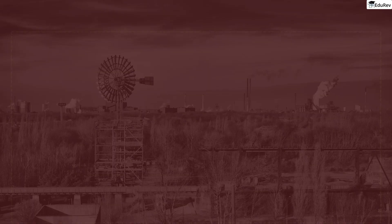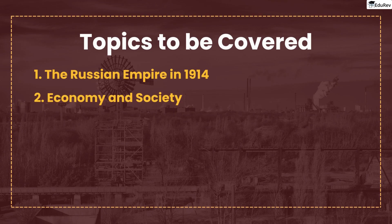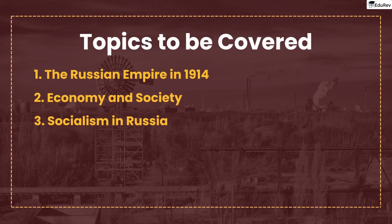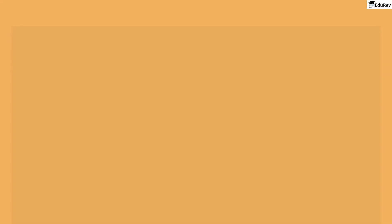To study this Russian Revolution, we've divided this video into the following events. First, the Russian Empire in 1914, or the Composition of the Empire. Second, Economy and Society, or how the structure of Russian Society was. Third, Socialism in Russia, or the spread of a fair and equal society. Fourth, A Turbulent Time — the 1905 Revolution, or the spark of hope for a new era. Fifth, the First World War and the Russian Empire, or an end to the Russian Empire. With that in mind, let's move to the first topic: the Russian Empire in 1914.